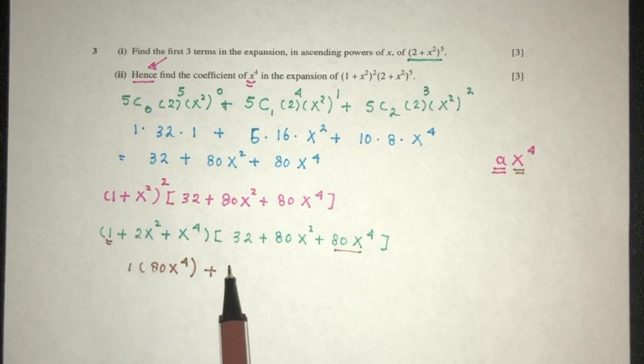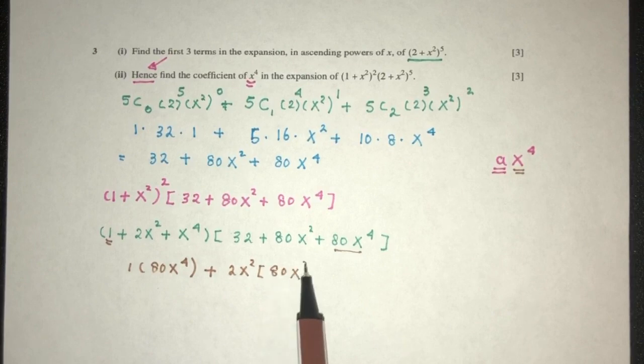Now next one, here we have 2x square. Obviously, we have to multiply by this one. So we get something in x power 4.